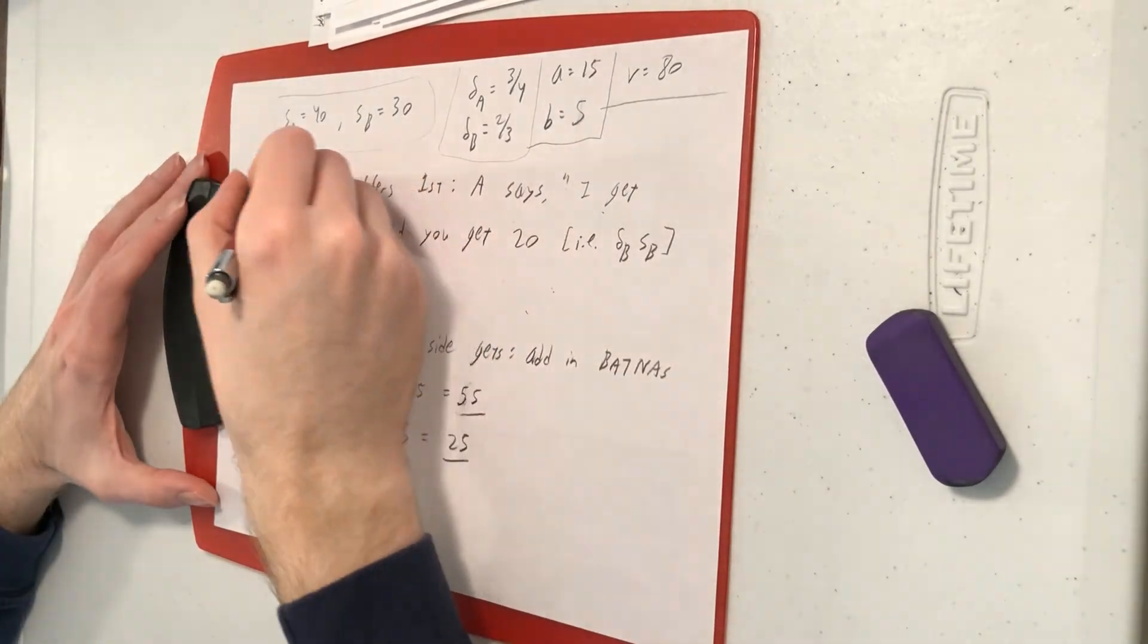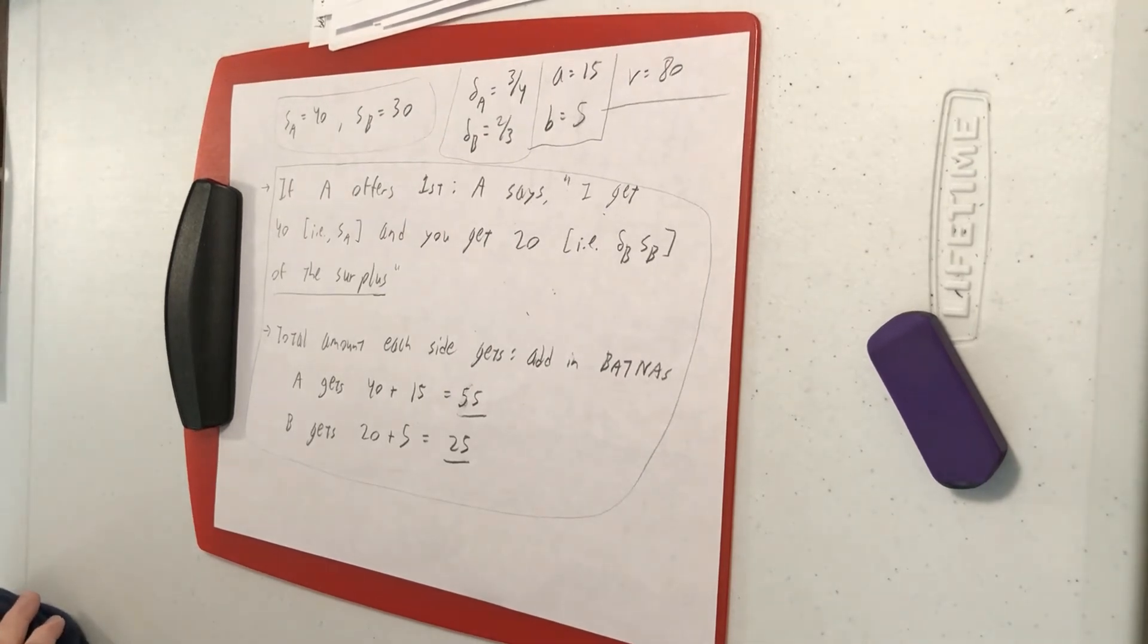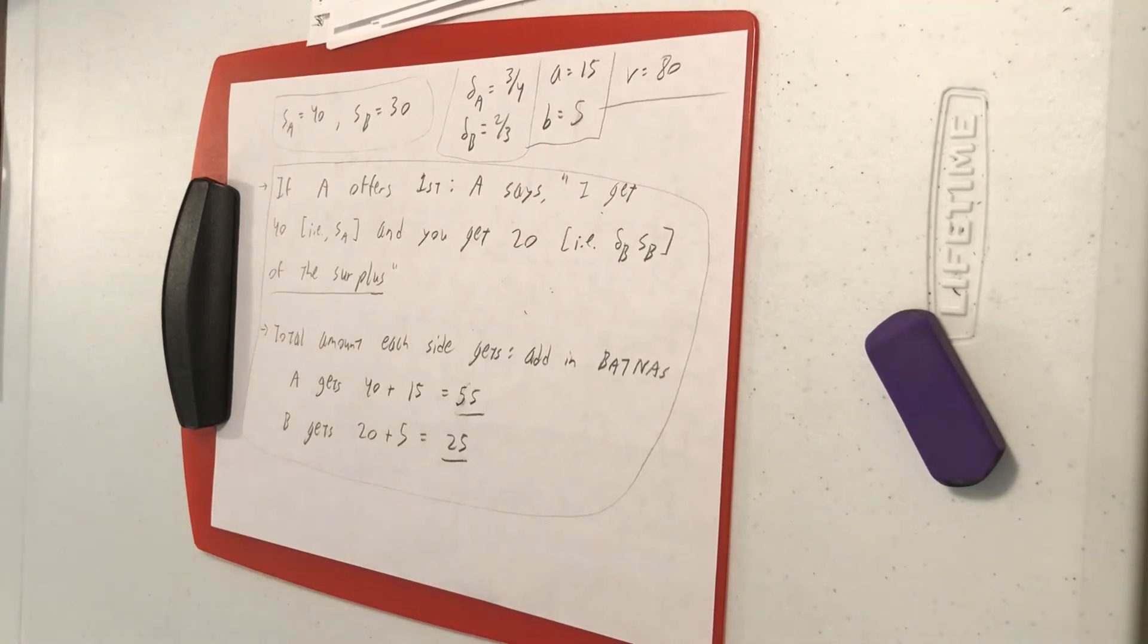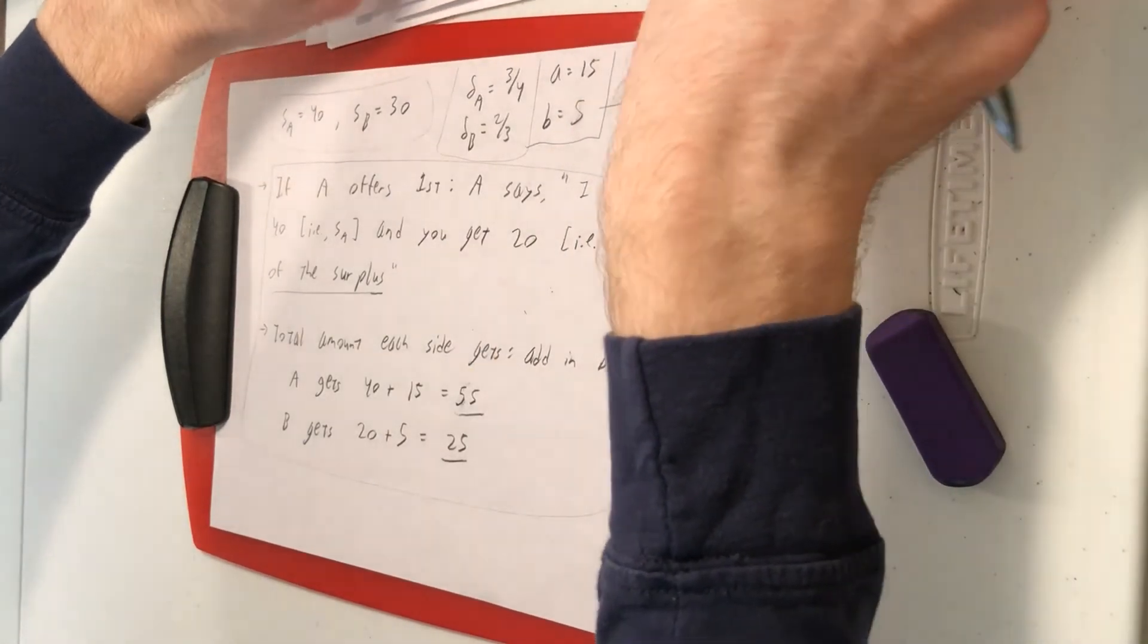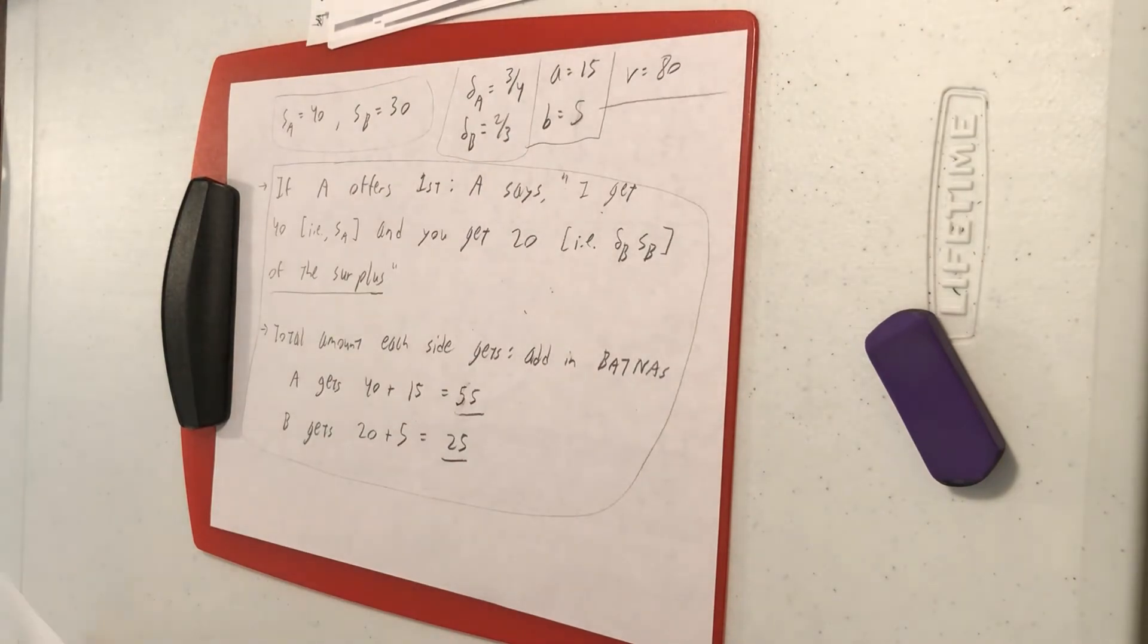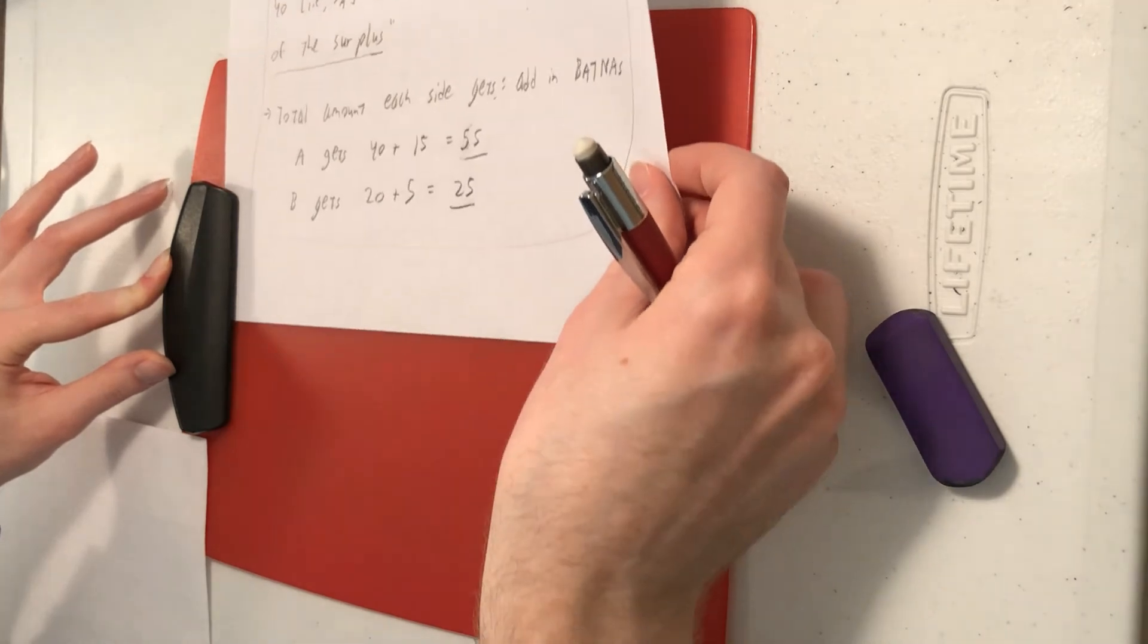That's all if A makes the first offer. What if instead B makes the first offer? Like we said before, making the first offer is an advantage because the other side wants to get a deal because they're impatient, because they're desperate for a deal. You can skew things in your favor and still get away with it. So let's verify that. We expect it to be true that if B offers first, then this deal should be better for B than this 55-25 split. So B should get more than 25 if B is making the first offer.